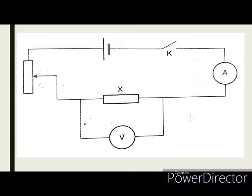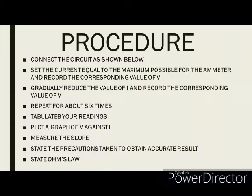We are going to simply be connecting it as it is in the diagram that you are seeing. So I'm going to quickly set up the experiment as shown above and then set the rheostat to get the maximum possible current from the ammeter. Once that is done I will record the corresponding value of the voltmeter. Then I'll gradually reduce the current value using the rheostat and also record the corresponding value of V. I'll do that for six different readings and then plot our graph.